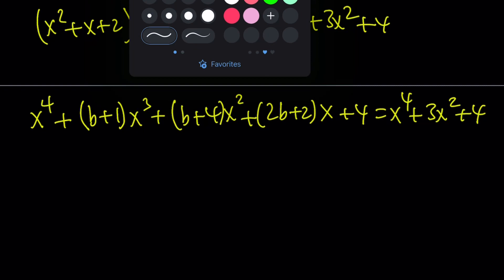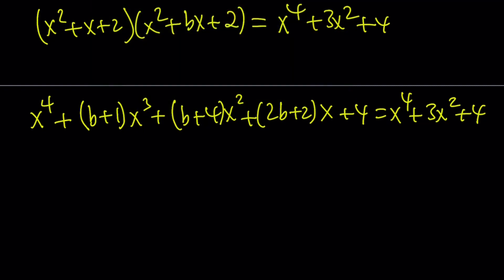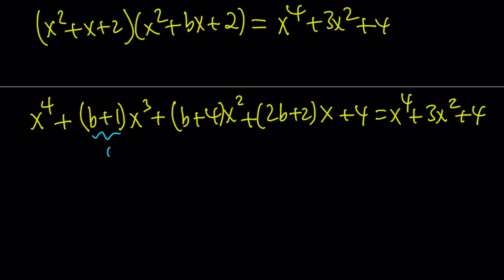Now, what does this mean? It means the coefficient of x to the 4th must be the same, the coefficient of x cubed, so on and so forth, on either side of the equation. Because these are polynomials that are true for all values of x, the real number set. The coefficient of x cubed on the right-hand side is, there's no x cubed, so it's 0. The coefficient of x squared on the right-hand side is a 3. The coefficient of x is 0. And the constants are the same.